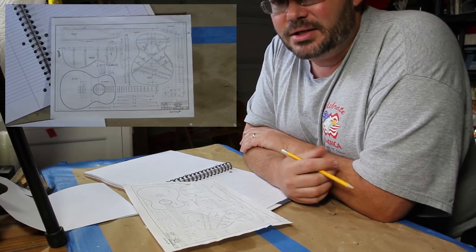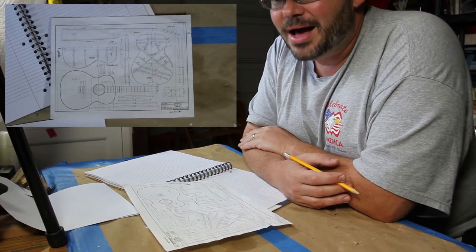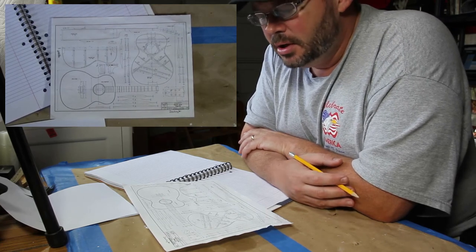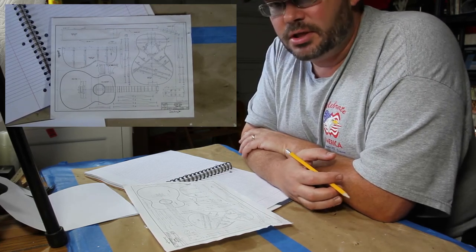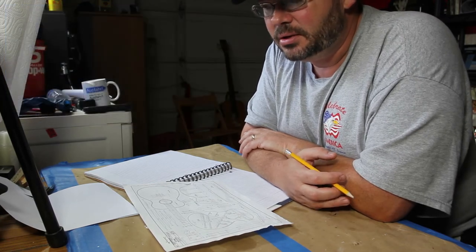Constructing my back and sides out of Indian rosewood. We talked about the characteristics of that. Measured out, cut out my sides, and was actually able to get the first side bent in the bending jig.